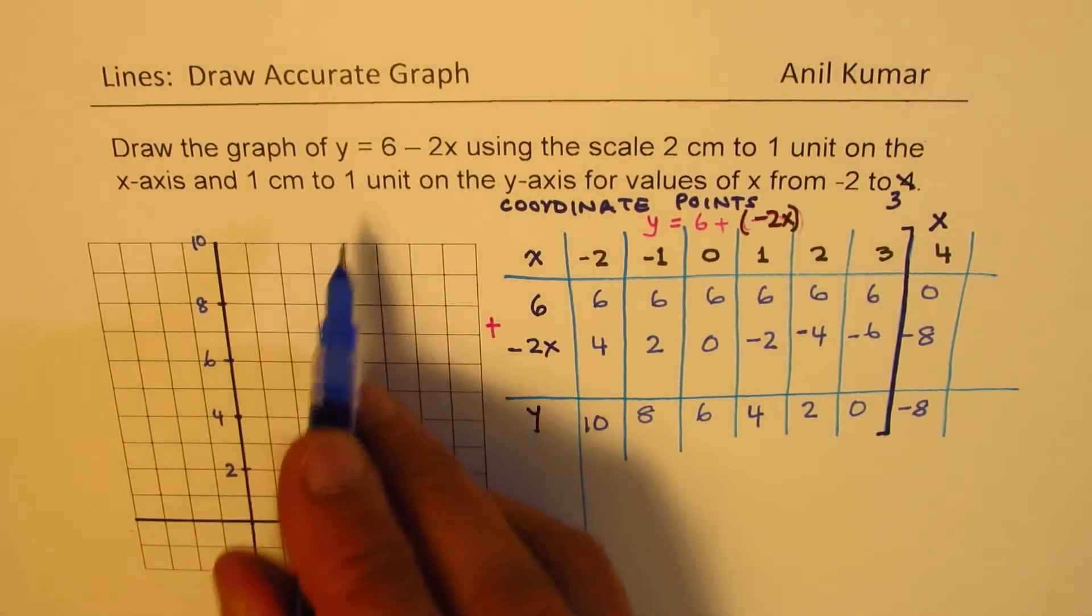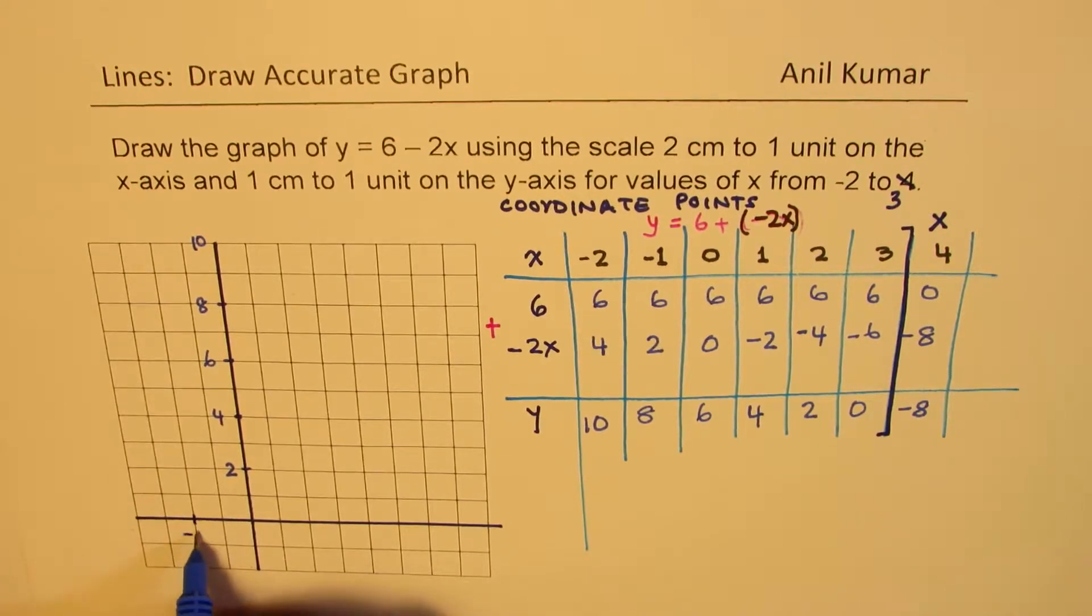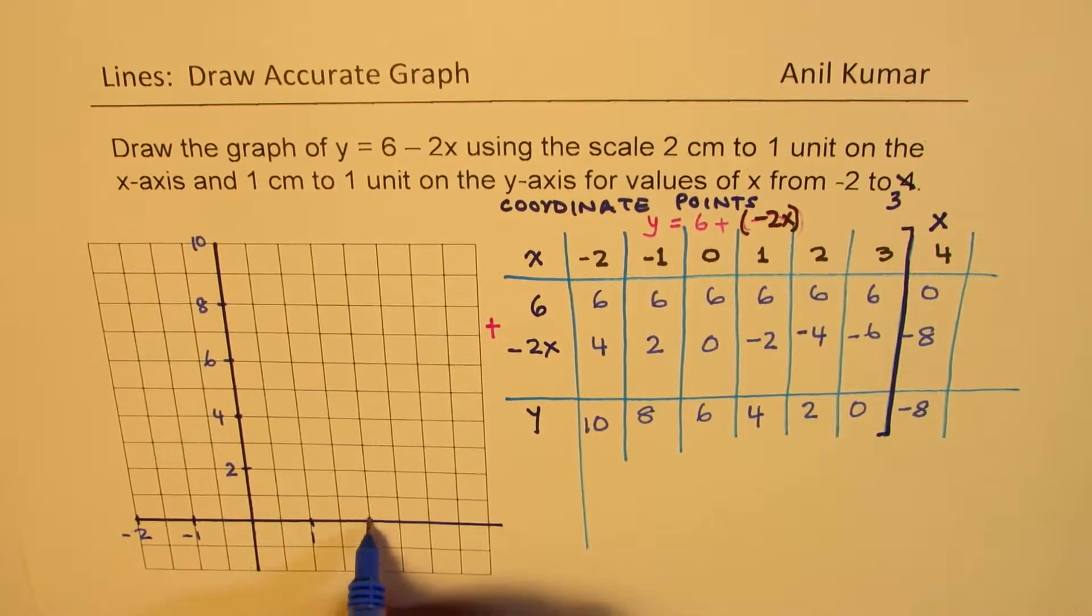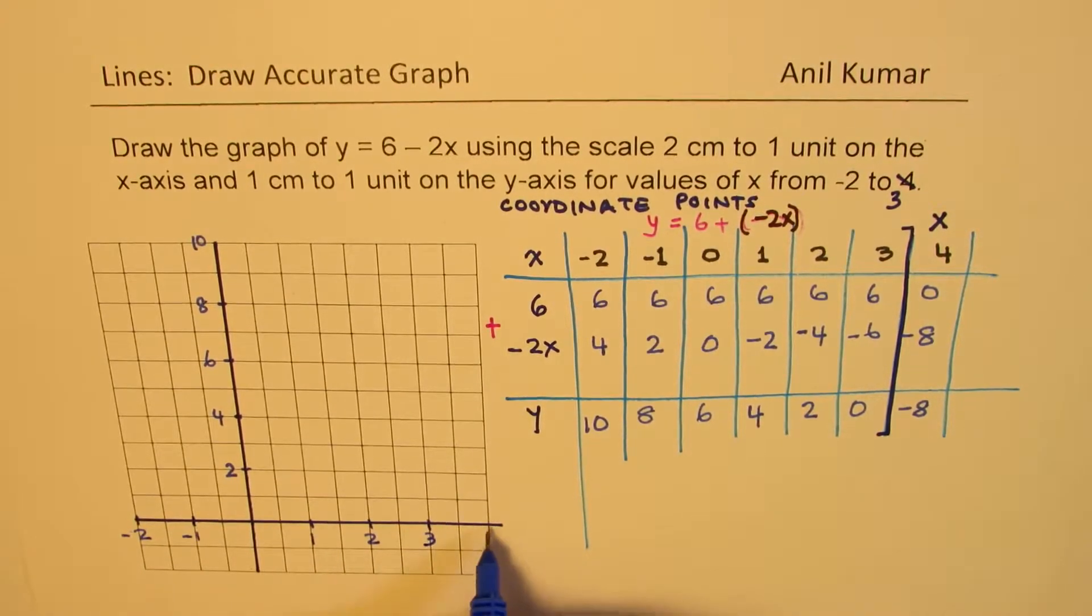And here the scale is 2 units. So we have minus 1, that is minus 2. And this is 1, 2, and 3. So that is 4 for us, but that point is going way beyond our scale.